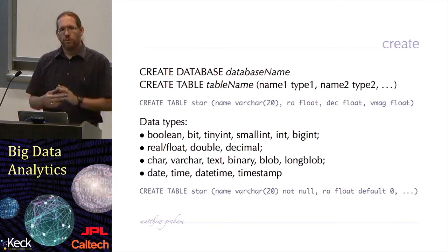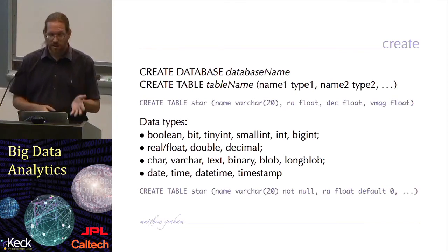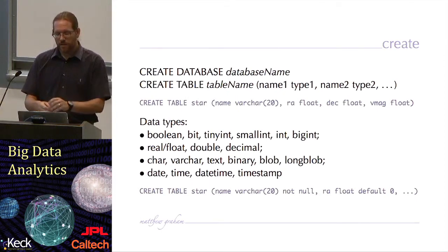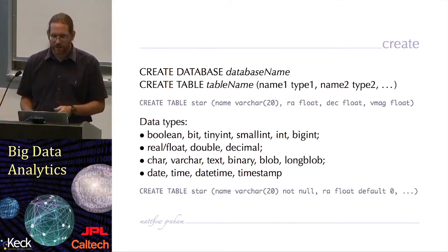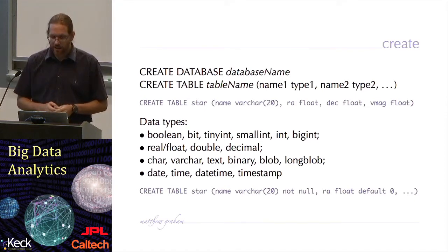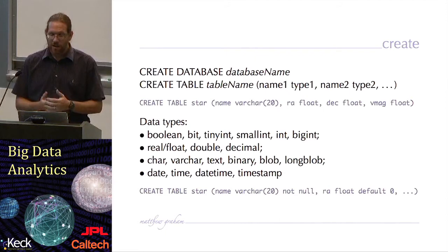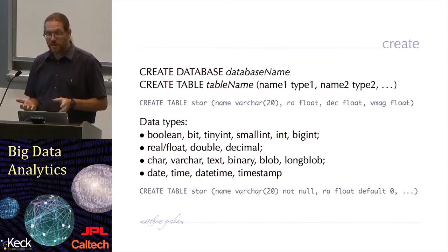If I want to create a new database or create a new table in my database, I would use the create command. The syntax is create database, database name, or create table, the name of my table, and then the column name and the data type for the column as a list. So the example there — create table star — creates a table called star with four columns: name, RA, dec, and V magnitude. The data types are a variable character string up to 20 in length and then three float values. A number of data types are supported, including Boolean, integer, real, float, double, decimal — which can be 32-bit or 64-bit — and various string and date/time data types.